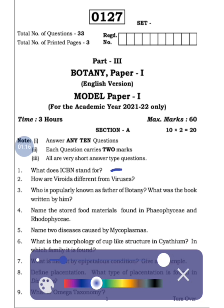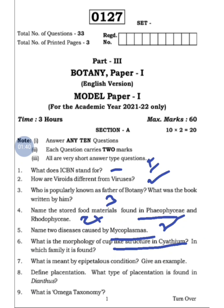First question is from Chapter 1. Second question — how bacteria differ from viruses — is from Chapter 2. Father of Botany is from Chapter 3. Phaeophyceae and Rhodophyceae are from Chapter 4. Mycoplasma diseases are from Chapter 2. Complex structure in cyathium is from Chapter 5. Epipetalous condition and placentation are also from Chapter 5 — overall three questions from Chapter 5. The ninth question is from omega taxonomy, Chapter 8.